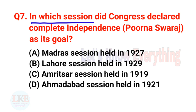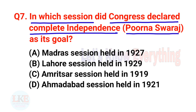Question number seven: In which session did Congress declare complete independence, Purna Swaraj, as its goal? A. Madras session held in 1927, B. Lahore session held in 1929, C. Amritsar session held in 1919, D. Ahmedabad session held in 1921. The right answer is option B, Lahore session held in 1929.